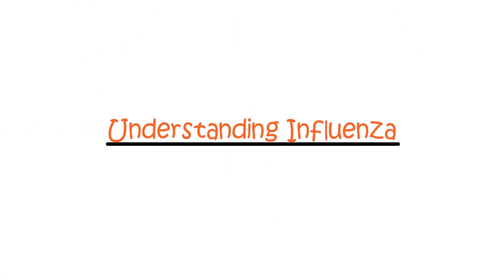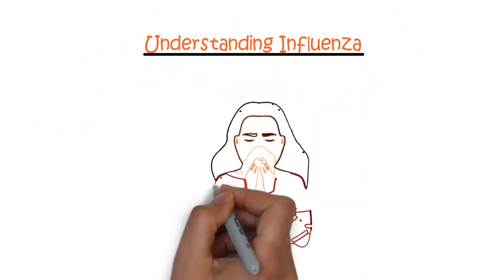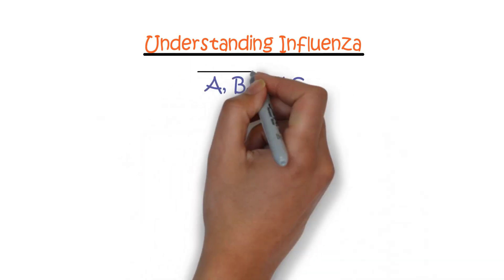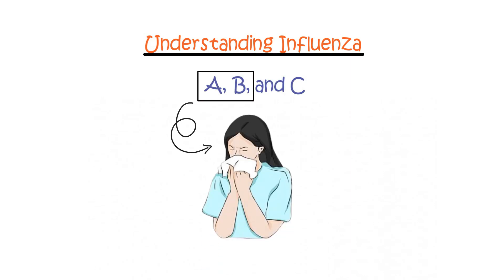Understanding influenza. Influenza, or the flu, is primarily brought about by the influenza virus, which falls into three distinct categories: A, B, and C. Among these, influenza A and B are the predominant culprits behind most flu cases.